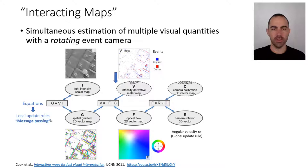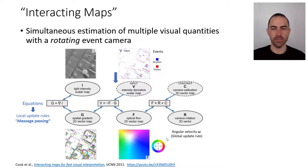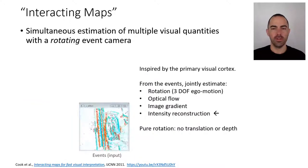These are local update rules for visual quantities. For something global like angular velocity, there is a global update rule. So it's a kind of distributed processing. Let's take a look at the video.